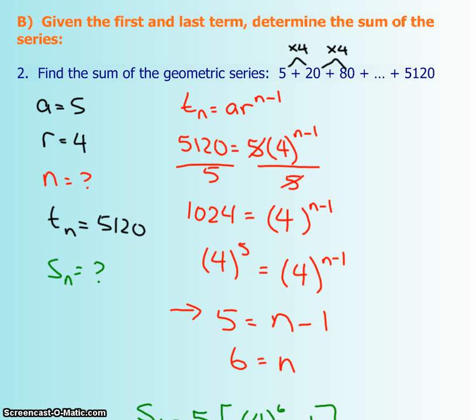The second question says, if you're given a geometric series that ends, how do you find the sum of all of it? Well, first of all, I want to find my r value because I have my a. My r value looks like it's multiplying by 4 each time. And then this guy is my tn because I don't have my n.